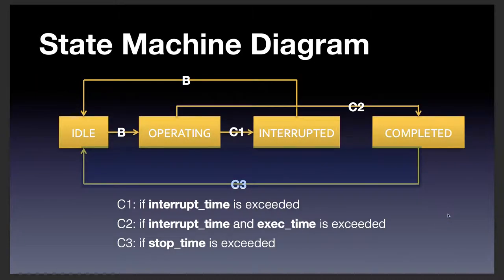So the state machine diagram. There are four main states in the Laundry Monitor: idle, operating, interrupted, and completed. In the idle state, the Laundry Monitor waits for an input from the user. This input is just a button push — the 'B' labels in this diagram refer to buttons. When the user presses a button on the device, it switches to operating mode.